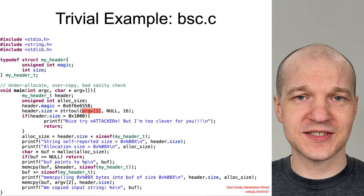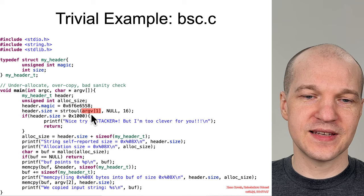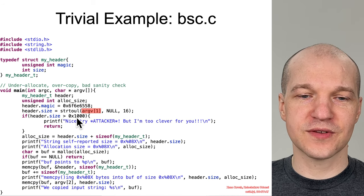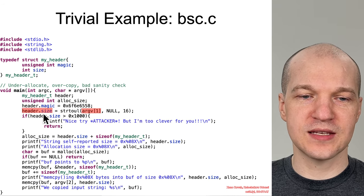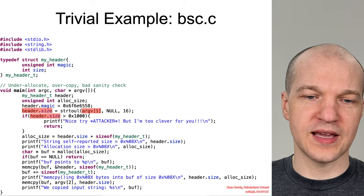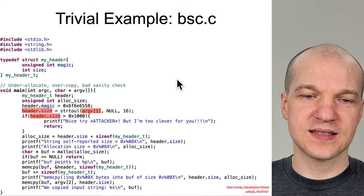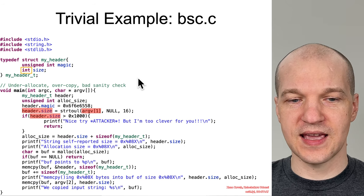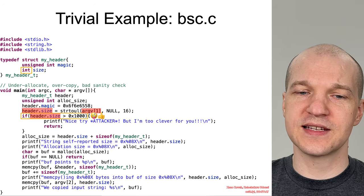Now let's look at a few more quick examples of that. Same idea — this was our more complicated version from before. We've got our attacker-controlled value coming in, size is attacker-controlled, and we're checking it against hex 1000. Same idea: size is once again signed, and consequently this is an insanity check.